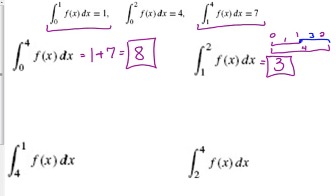So the integral from 4 to 1, we're just flipping the limits on that last one. So that would be negative 7. Anytime you invert those limits, you're just going to change the sign.